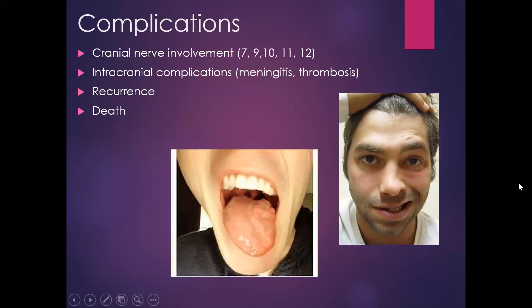Complications include involvement of cranial nerves 7, 9, 10, 11, and sometimes 12. As shown in the image, on the right hand side we have a facial nerve palsy with no forehead sparing — hence it's lower motor neuron, a complete ipsilateral paralysis of the facial nerve. Intracranial complications can include meningitis, thrombosis, or cerebral abscess. Mortality is now in the region of 10 to 20 percent — still significant but better than the previously described 50 percent.